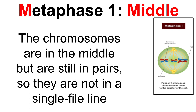The second phase in meiosis is called metaphase one. During this phase, the chromosomes are in the middle but are still in pairs, so they are not in a single file line like they were in mitosis. For easy memorization, remember that the M in metaphase stands for middle — it is where the chromosomes are lined up in the cell.